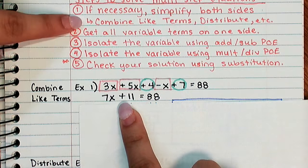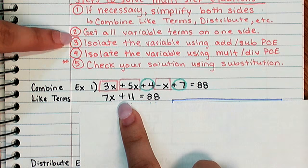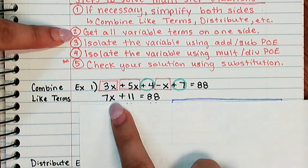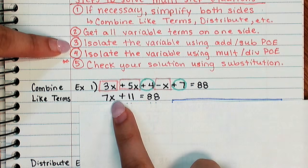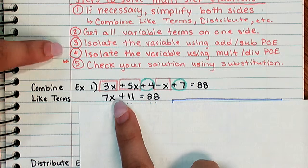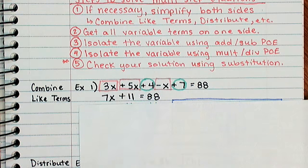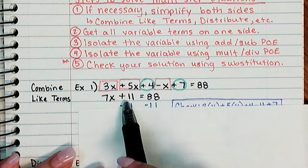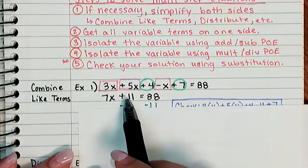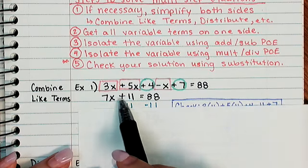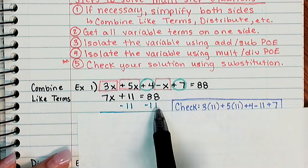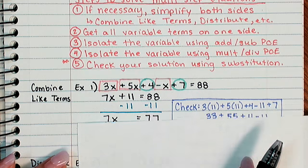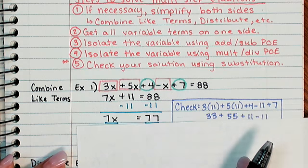After I had combined my like terms, I checked and made sure that I only had my variables on one side of the equation and then I could move on to isolating the variable using the addition or subtraction properties of equality. That's what the PoE stands for. So because I'm working with addition and subtraction first, I'm going to move this positive 11 first. By subtracting 11 from both sides of the equation, I get 7x equals 77.